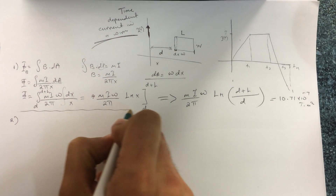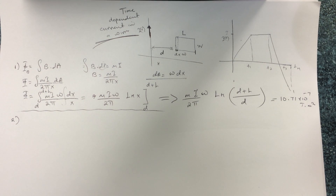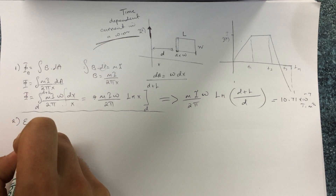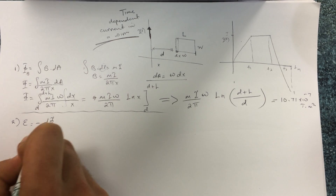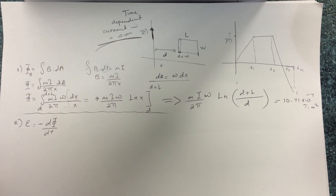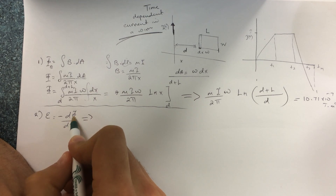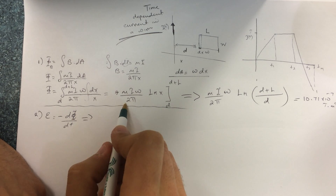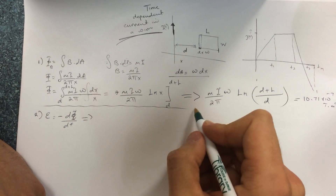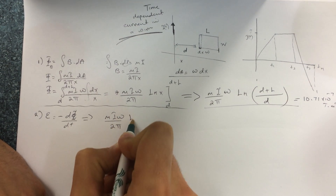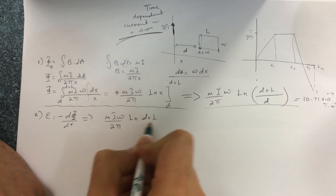Question 2 is asking for the EMF. From the formula sheet, EMF = −dΦ/dt. The flux Φ is the same expression we just found: Φ = (μIW / 2π) · ln((D + L) / D). Now we need to differentiate this with respect to time.